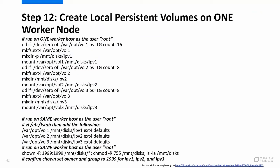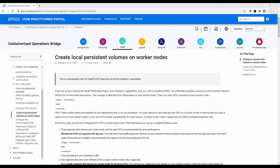Step 12 is to create local persistent volumes on worker nodes. For evaluation purposes, local persistent volumes are required on only one worker node. If you are installing for other purposes, please go to the URL shown on the screen. Otherwise, execute the commands shown on the screen on one worker node. For information on how to create local persistent volumes on worker nodes in a production environment, please go to the URL shown on the screen.